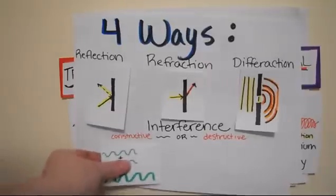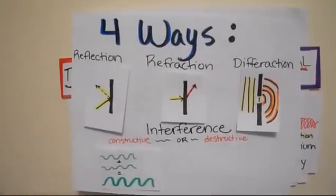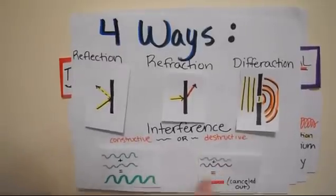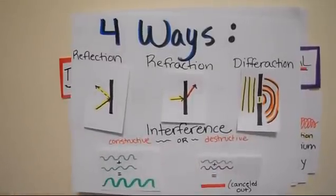Finally, interference is when two waves hit each other and either combine to create constructive or destructive interference depending on if their crests line up.